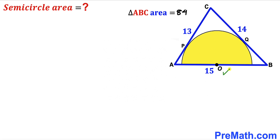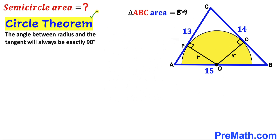We connect center O with points P and Q. OP and OQ are each the radius r of the yellow semicircle. By the circle theorem, the angle between a radius and a tangent is always 90 degrees, so the angles at P and Q are each 90 degrees, since OP and OQ are radii and the sides are tangent lines.